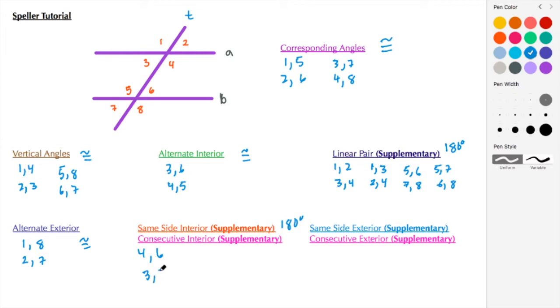Now let's move on to same side exterior. Another way of saying that is consecutive exterior, and those are supplementary, meaning they add up to 180 degrees. Same side exterior would be 2 and 8, and 1 and 7.